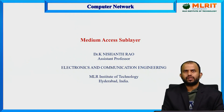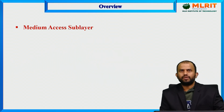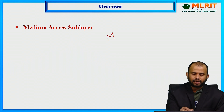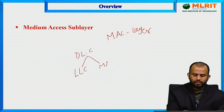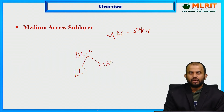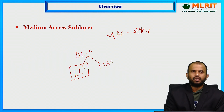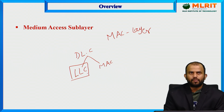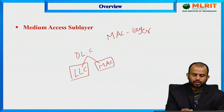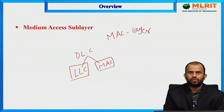Good morning everyone. Today we are discussing another important topic in computer networks: the Medium Access sublayer, which we call the MAC layer. In the data link layer, we have two sub-layers: the Logical Link Control layer and the MAC layer. The previous sessions covered the logical link control layer — protocols like HDLC, PPP, and frame formats. Now in this session, we are going to discuss the Medium Access Control layer.